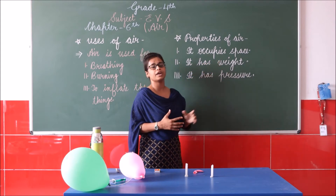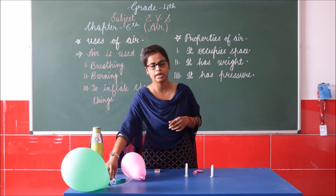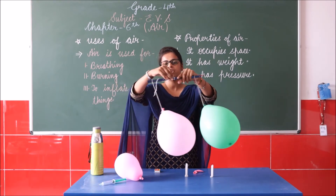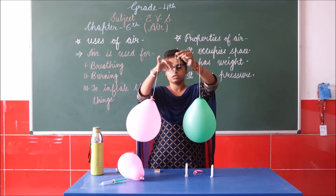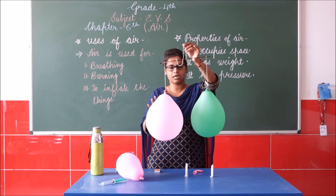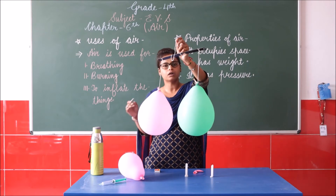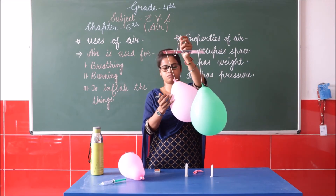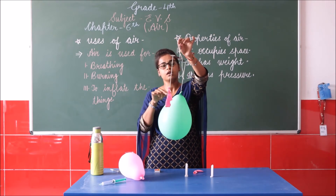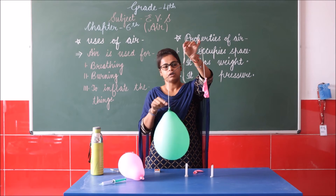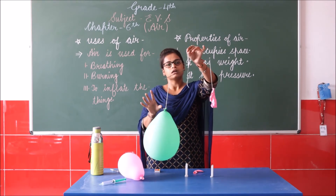Next property: air has weight. The air is very light, but it has weight. We will do an experiment. I have taken a balance with two balloons — both the same size and same shape, so their weight is equal. Now I will prick one balloon. You can see the other side of the balance has gone down. Why? Because it is heavier — the inflated balloon with air is heavier. This proves that air has weight.